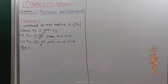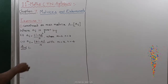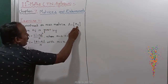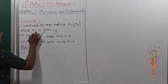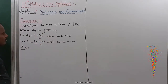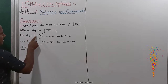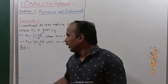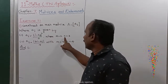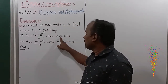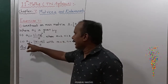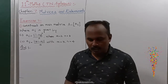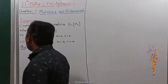Exercise 7.1, first sum: construct an M by N matrix A equal to the matrix of Eij, where Eij is given by the formula (i minus 2j) whole square divided by 2. The first subdivision has M equal to 2, N equal to 3, that is a 2 by 3 matrix. The second subdivision is a 3 by 4 matrix, so 3 rows and 4 columns.